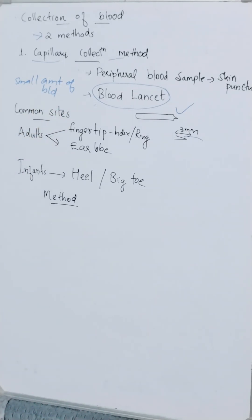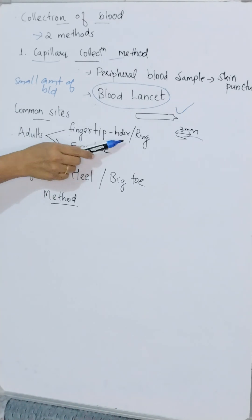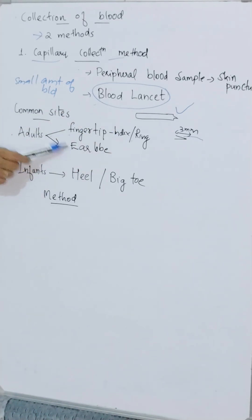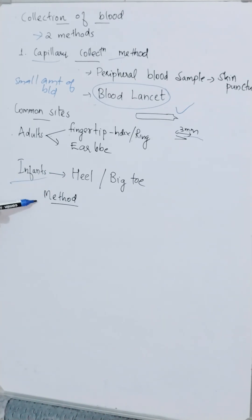The common sites for capillary blood collection in adults are the finger tip — that is, index or ring finger — and the ear lobe. In infants, the puncture is made on the heel or big toe. To summarize: for adults it's finger tip and ear lobe; for infants it's heel or big toe.